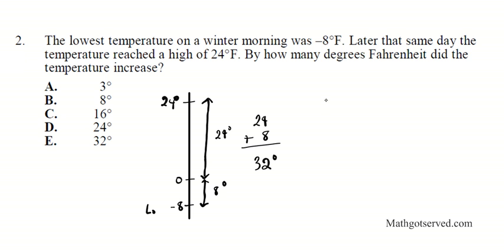Another way to do it is we can just do the high minus the low. So the high is 24 degrees and then we subtract it from the low which is negative 8. Remember anytime you multiply signs, minus times minus is a plus. So 24 plus 8, 32 degrees. So your answer is E.